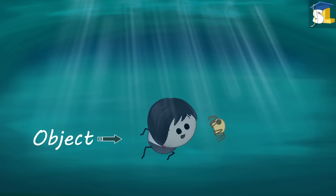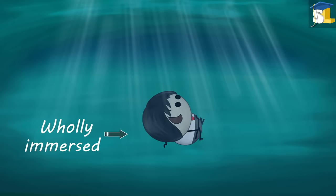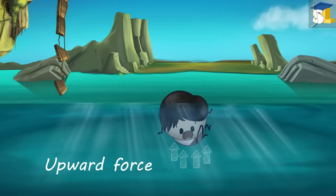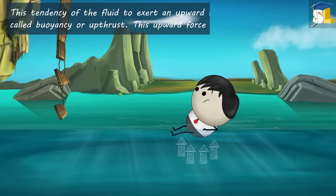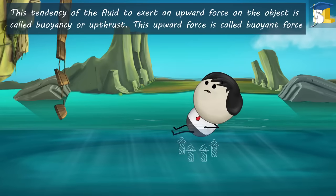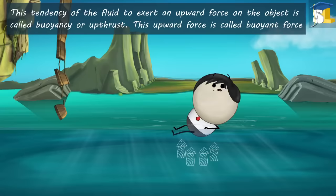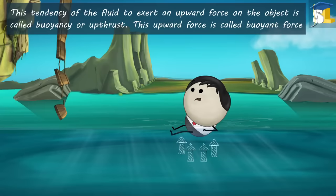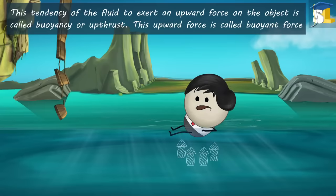When an object is partly or wholly immersed in a fluid, an upward force is exerted by the fluid on that object. This tendency of the fluid to exert an upward force on the object is called buoyancy or upthrust. This upward force is called buoyant force.